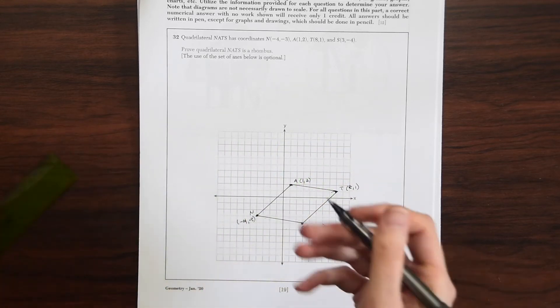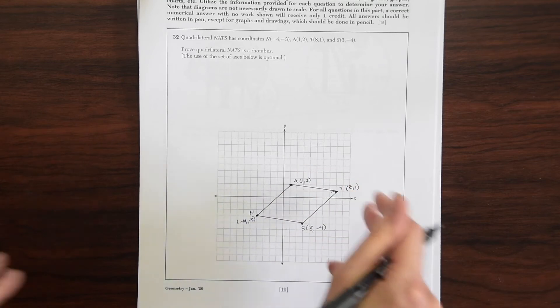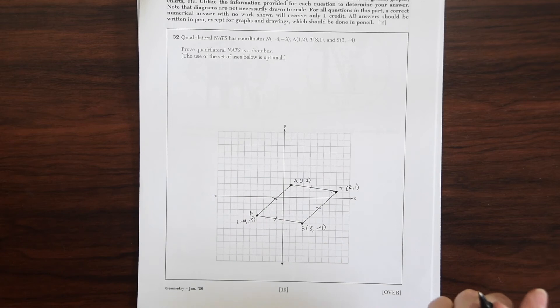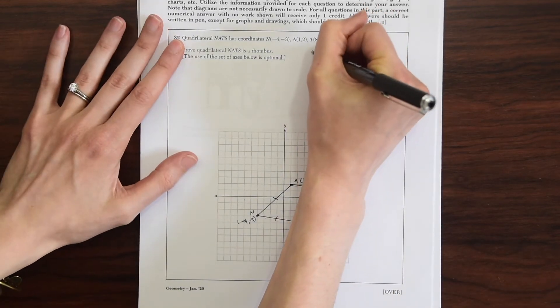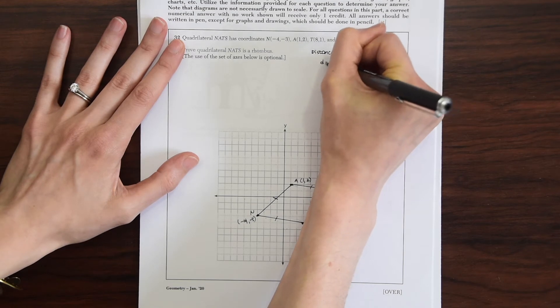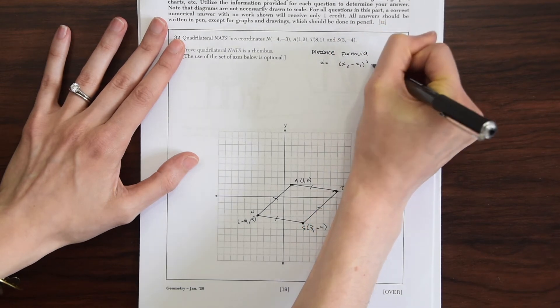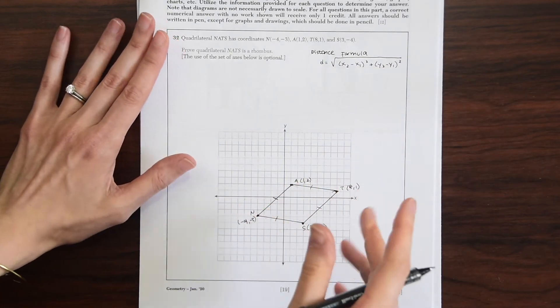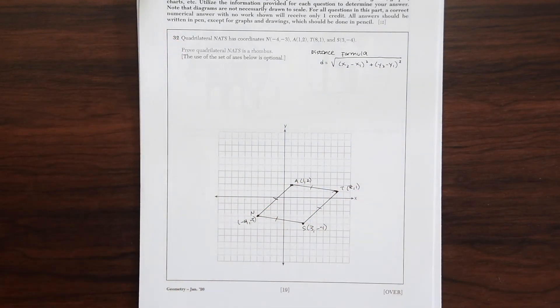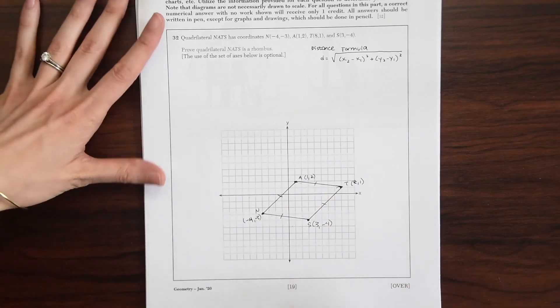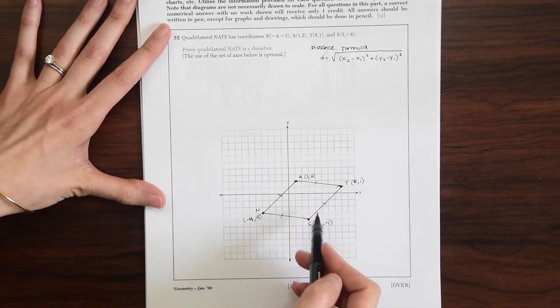So now we need to show mathematically that all these sides are congruent to each other. So one way to do that is by using the distance formula. So the distance formula, when we take two points, will show us the distance between those two points. So if each side has the same distance, then that means this is going to be a rhombus. So that means we have to measure out each distance.